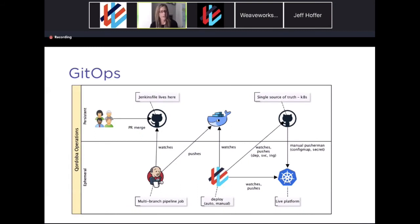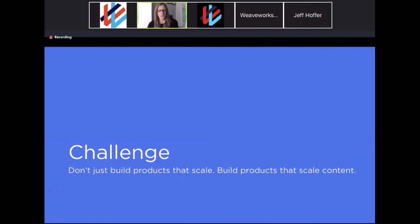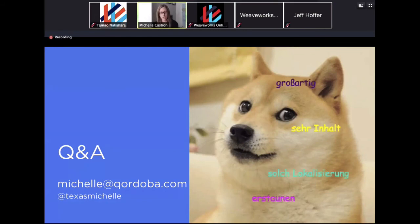Our diagram starts with an engineer merging a PR — that's the last manual piece. The rest is all automated: Weave watching the container registry, looking at current state, reconciling that with what we think our state is as committed into our repository, doing a lot of the heavy lifting for us, and giving us a really beautiful UI to see all of that. That was a whirlwind overview of how we're building a platform that scales — and that platform is really there to enable you to scale your application. My challenge for today is not just to build an application that scales, but to build one that scales in terms of content as well.